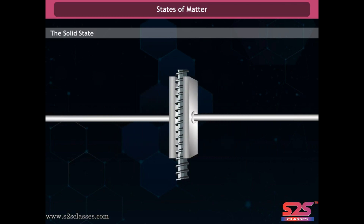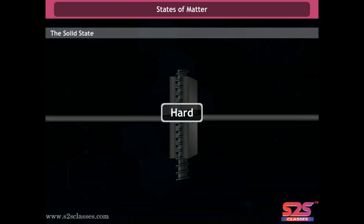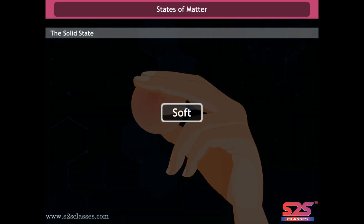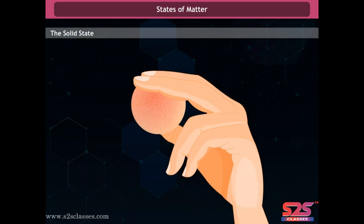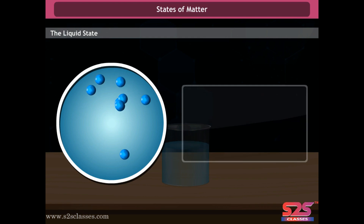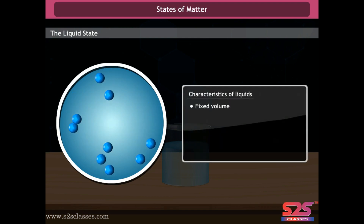Solids may break under force but it is difficult to change their shape. Although sponge is a solid, it can still be bent and compressed because it has small holes inside it — air is trapped in these holes and expelled when we press or squeeze them. Hence bending and squeezing is possible in the case of a sponge.